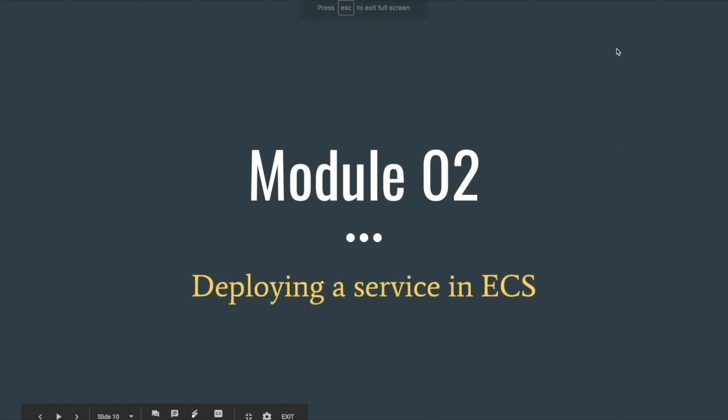Hey guys, welcome to another episode of AWS workshop series. This is module 2. In module 1, we developed the front end already, and in module 2, we are going to develop our back end application. The back end of Misfit is a containerized application where we are going to host it in AWS ECS, or Elastic Container Service.